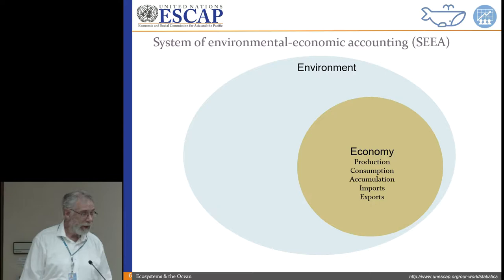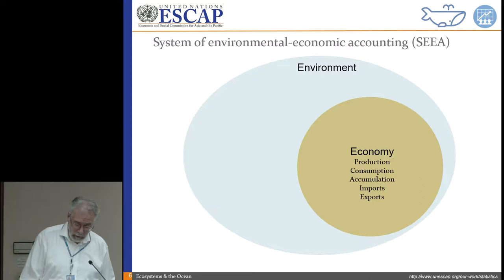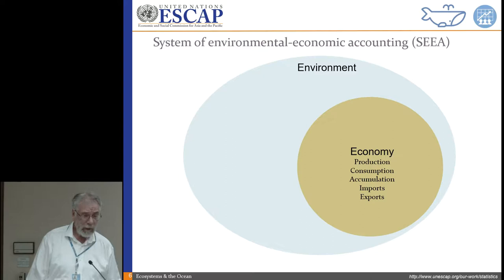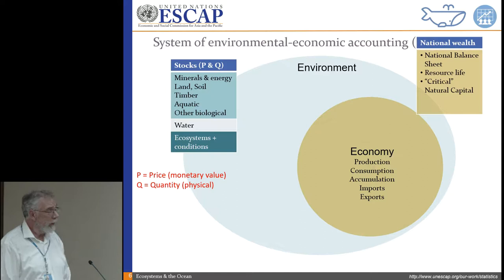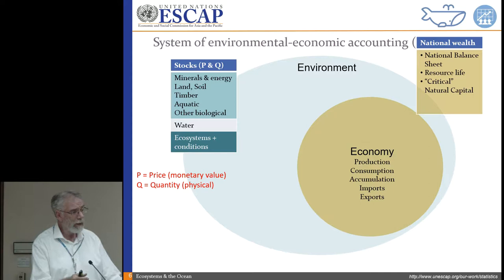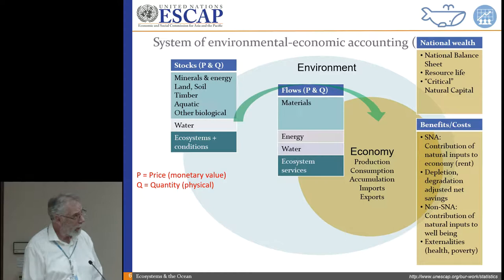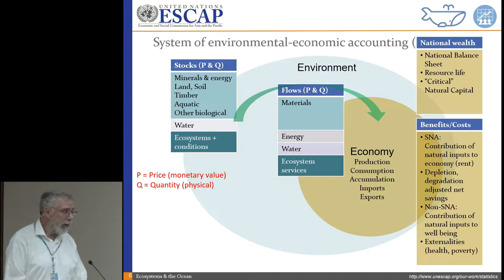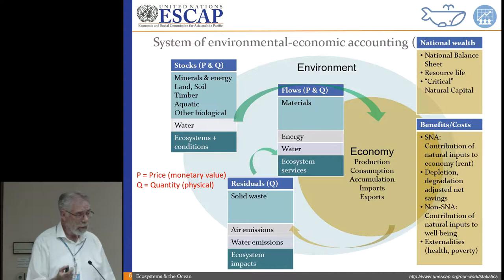The SEEA is being implemented, at least in part, by over 60 countries. It accounts for all of the stocks of the natural inputs — our assets: how much water, land, minerals, and energy we have, and the ecosystem types. It tracks how those stocks flow into the economy, who takes them out, who supplies them, who uses them. In the end, we get residuals — the pollutants, CO2, and things we try to recycle.